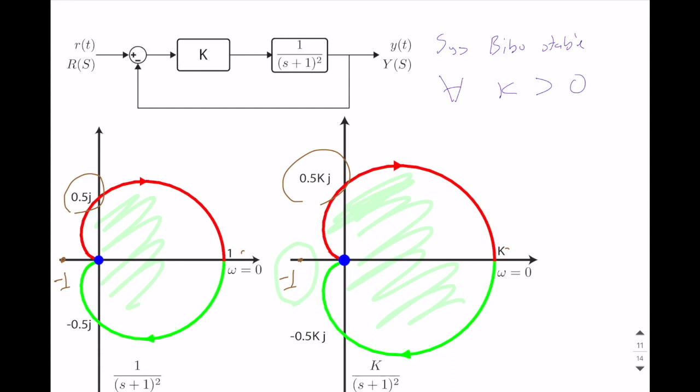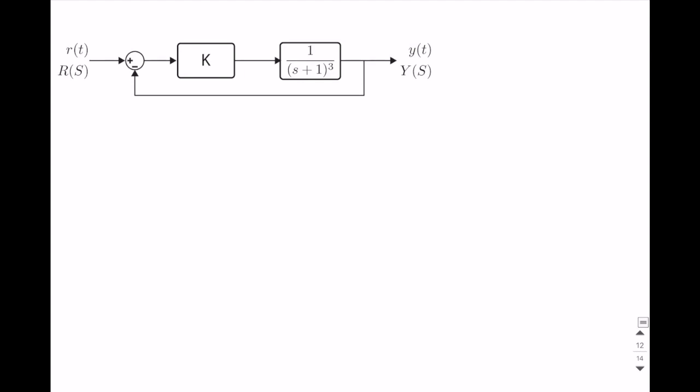So not only we did Nyquist plot analysis for specific k, we technically find the region of k that makes the system stable, which is in some sense similar to what we did with the root locus techniques. Let's show a different example which is similar. Here, g of s is equal to 1 over s plus 1 cubed. And our controller is same, still k.